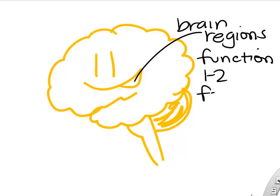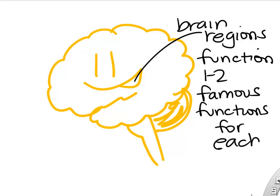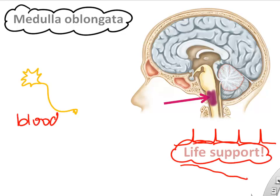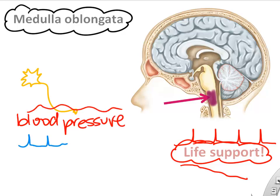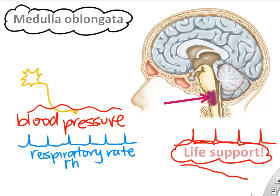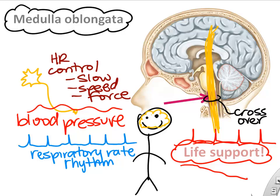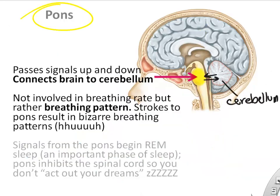For each brain region, we can identify one or two key functions. The medulla is like life support — it monitors blood pressure, sets the respiratory rhythm by sending signals to the diaphragm, and regulates heart rate. A lot of the crossover of axons also occurs in the medulla, which is why the left brain controls the right muscles and vice versa. The pons connects to the cerebellum and regulates the breathing pattern — not the breathing rate, which is set by the medulla.